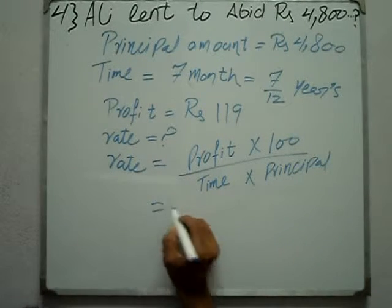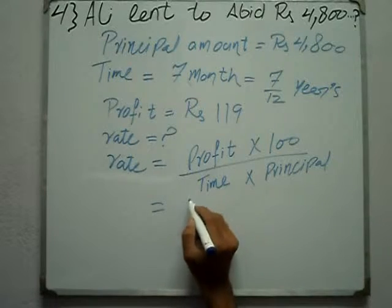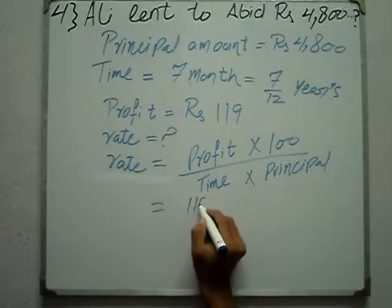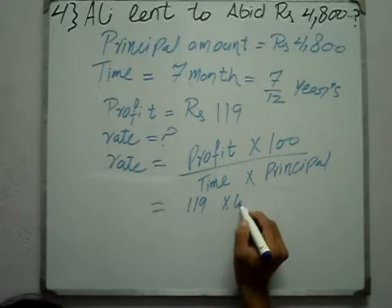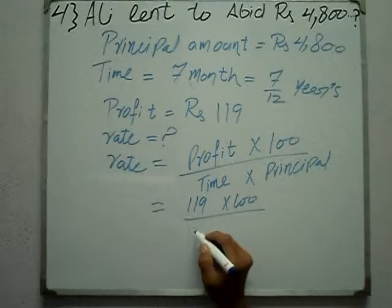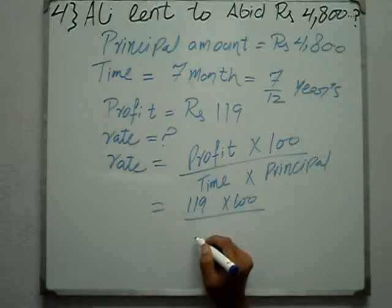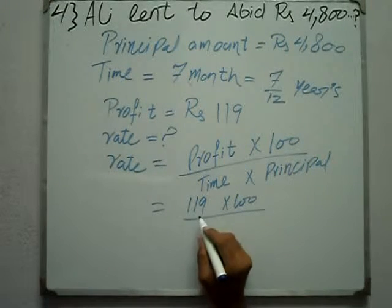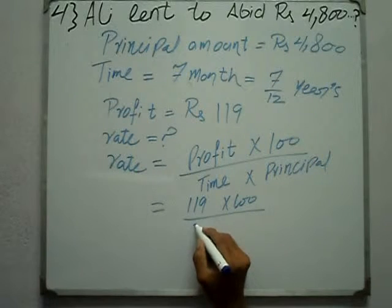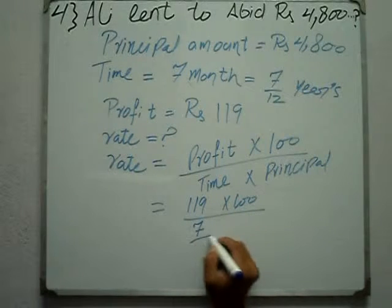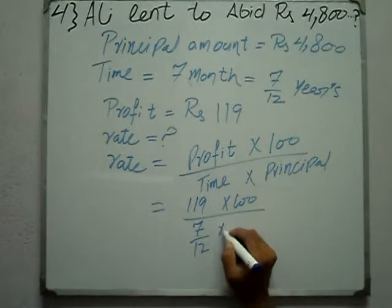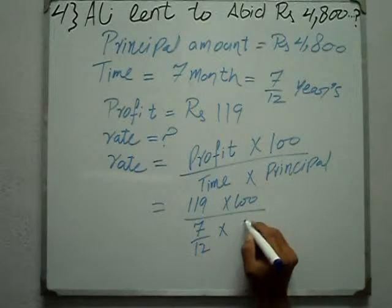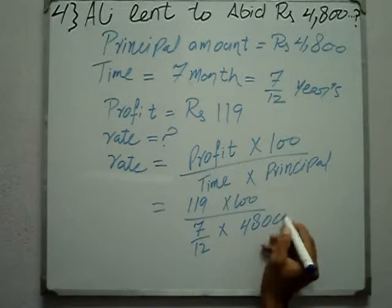Profit kya hai humare paas? RS 119. Multiply by 100. Time hai 7 over 12 years. Aur multiply karna hai Principal se. Principal kya hai? RS 4800.